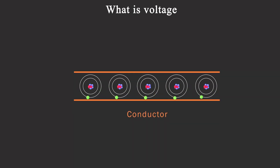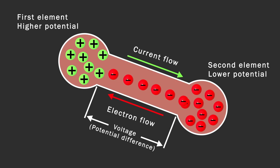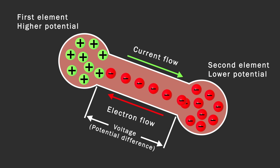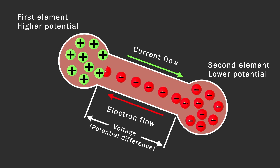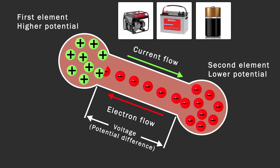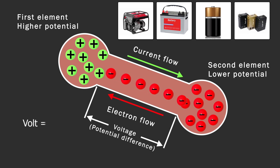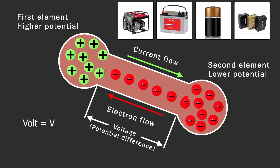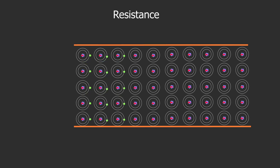What is voltage? Electric current is a flow of electrons in a conductor. The force required to make current flow through a conductor is called voltage, and potential is another term for voltage. For example, an element with more positive charges has a higher potential, while an element with more negative charges has a lower potential. The difference between two points is called potential difference. Electromotive force is the force which makes current continuously flow through a conductor, and can be generated from a power generator, battery, flashlight battery, fuel cell, etc. Volt, abbreviated as V, is the unit of measurement used interchangeably for voltage, potential, and electromotive force. One volt means a force which makes a current of one amp move through a resistance of one ohm.